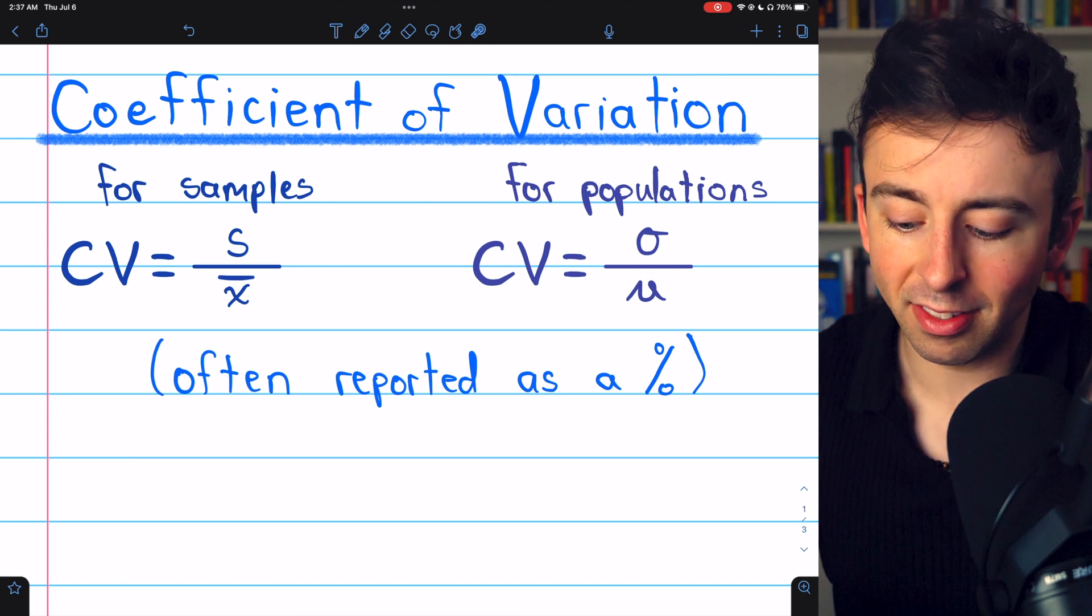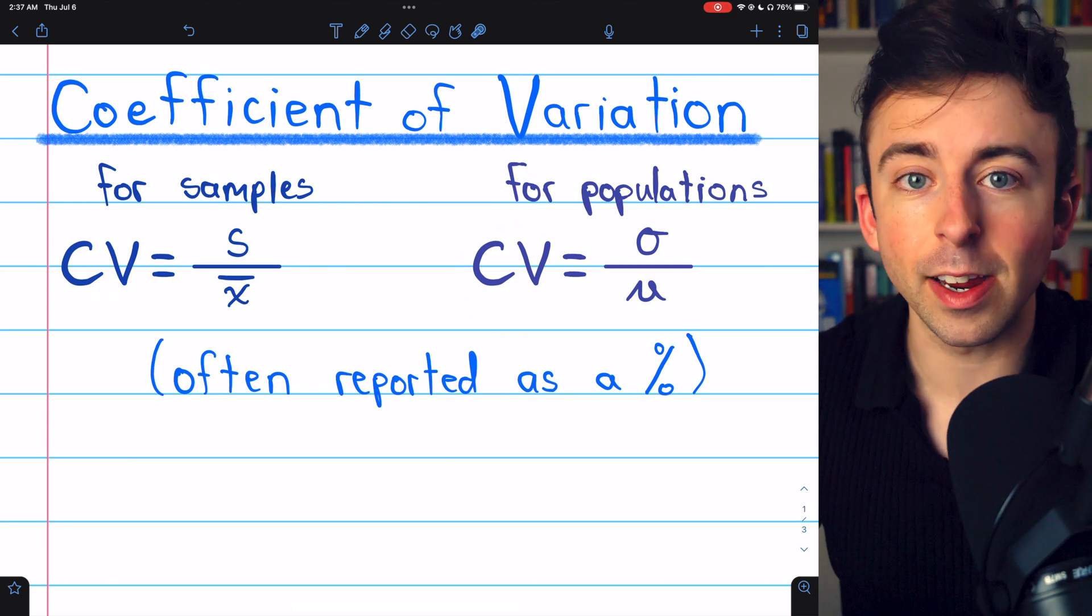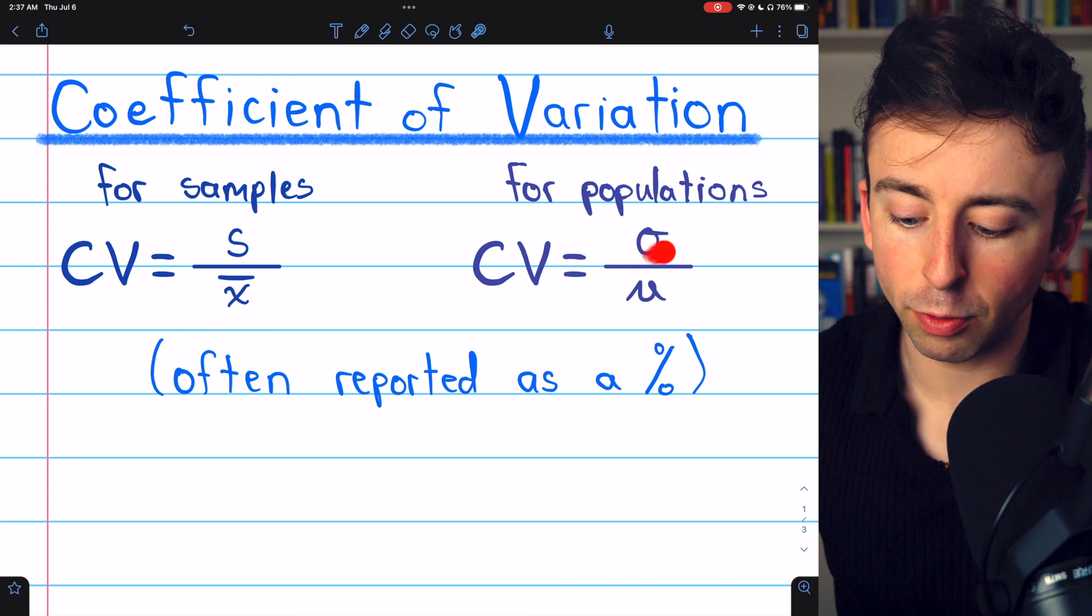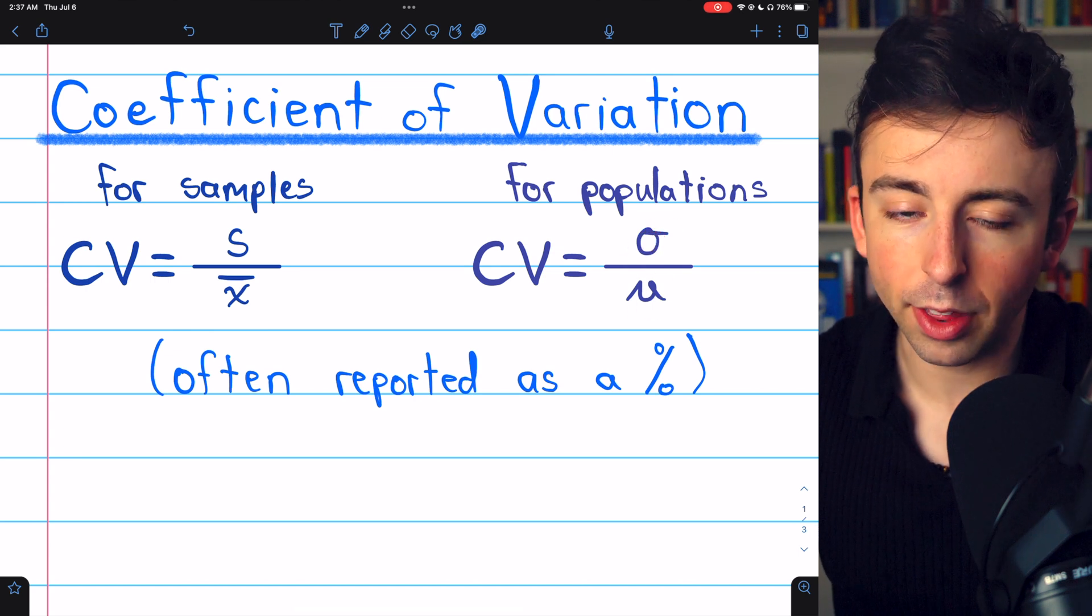For a population, it's similar, but the notation is just different. The standard deviation is written as sigma, and the mean is written with mu.